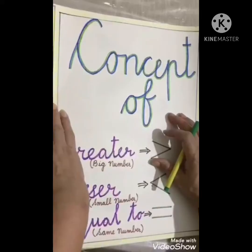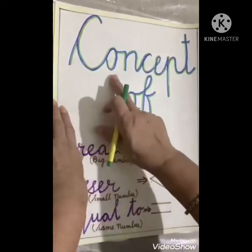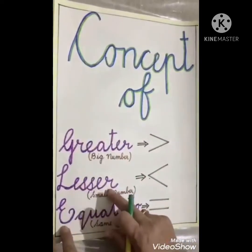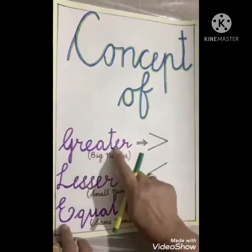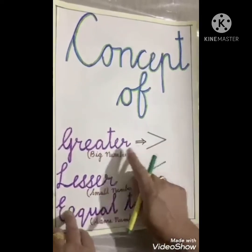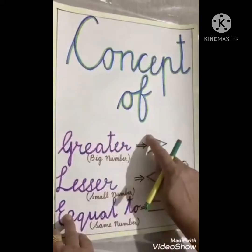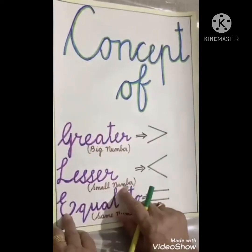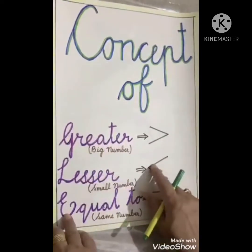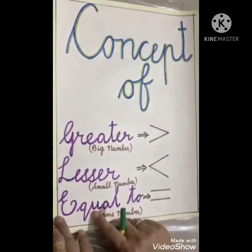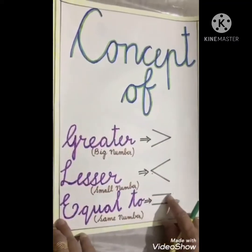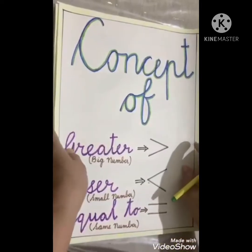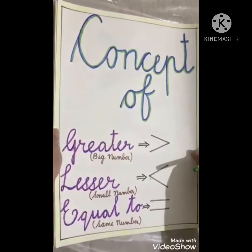Let's look at what we are going to learn today — it is the concept of greater than, lesser than, and equal to. This is the sign of greater than; greater means a big number and this sign is put towards the big number. This is the sign of lesser than, for a small number. And this is equal to — you might have observed this sign while writing tables.